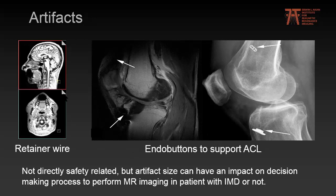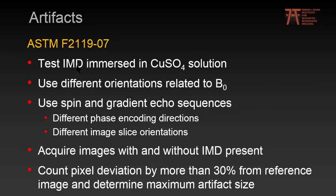Briefly on artifacts — for example from retainer wires or endo buttons supporting an artificial ligament. While not directly safety-related, artifact size can have an impact on the decision whether to perform imaging. The test standard recommends immersing your device in copper sulfate solution, using different orientations relative to B0, and acquiring images with and without the implant using spin and gradient echo sequences, changing phase-encoding direction and slice orientation to find the maximum artifact size.